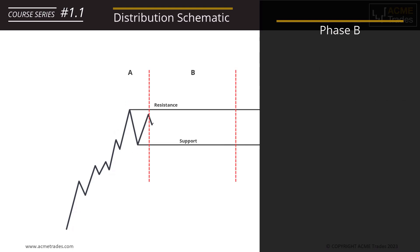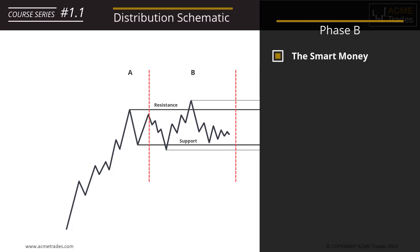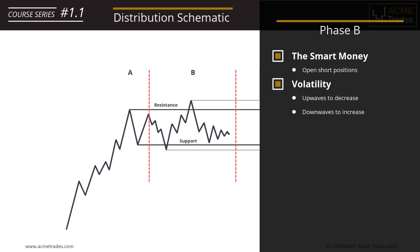Phase B within distribution is the longest or largest phase, and this is where the majority of cause is built. Due to the nature of distribution, the CEO — the smart money — wanting lower prices, positions themselves by opening shorts. Within Phase B, we want demand waves to decrease in size and volume compared to the supply waves. We want the selling pressure to increase, because both of these actions are bearish — poor buying and good quality selling.